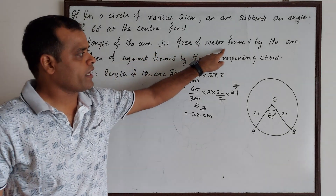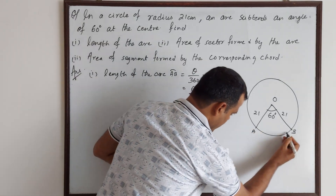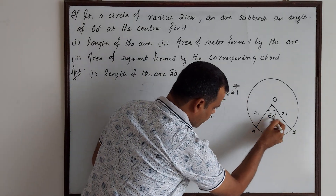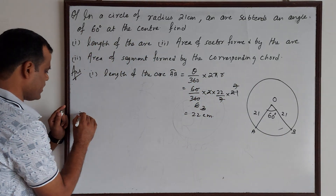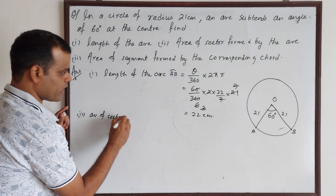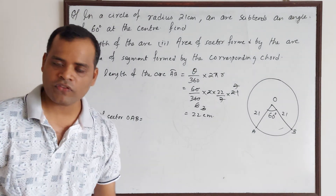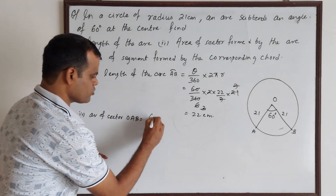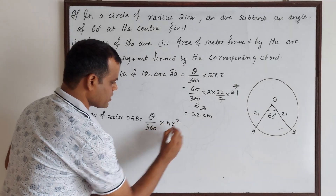Second, we have to find the area of the sector formed by arc AB. Part 2: area of sector OAB. What is the formula for the area of a sector? It is theta by 360 degrees into πR². So: theta divided by 360 degrees into πR².